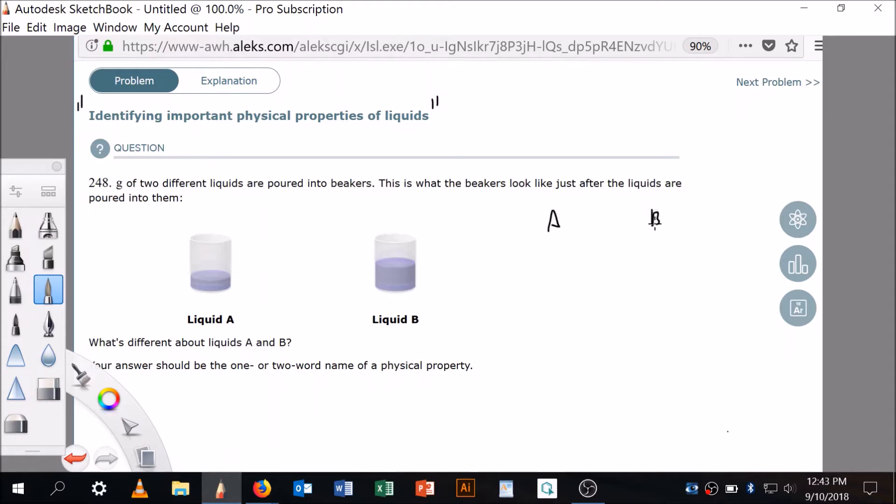Okay, so I've got A and B. And the mass of each of them is 248 grams.